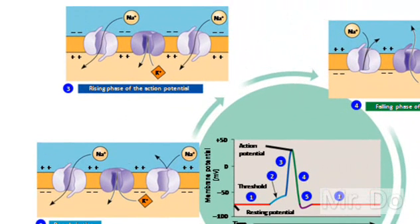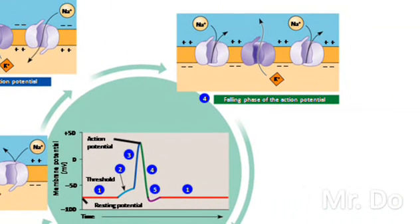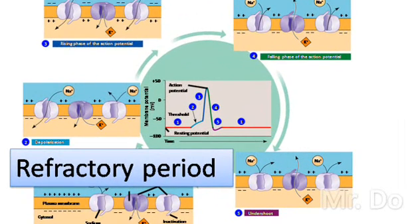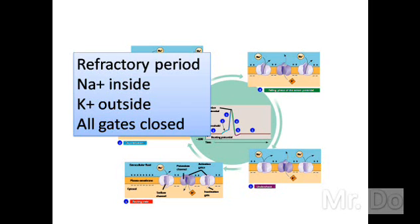So now all the sodiums are on the inside, and all the gated channel for sodium closes. Now we're going to go to potassium. So the gated channel for potassium is going to open, and slowly potassium is going to start rushing out. That's number four. And then as potassium rush out faster and faster, number four is going to drop. Then we finally end up at number five, called the refractory period. At this point, all the potassium is on the outside, and all the sodiums are on the inside. And all the gated channels are closed.